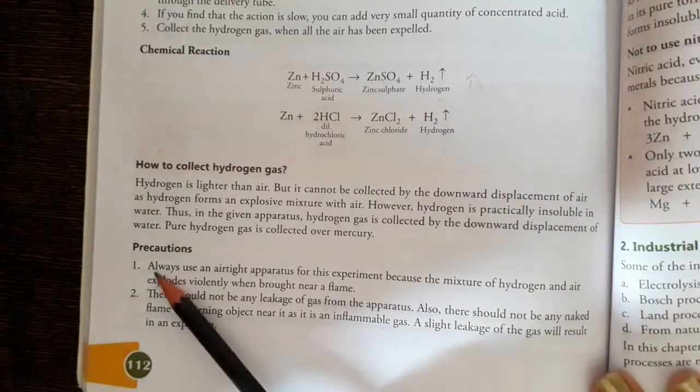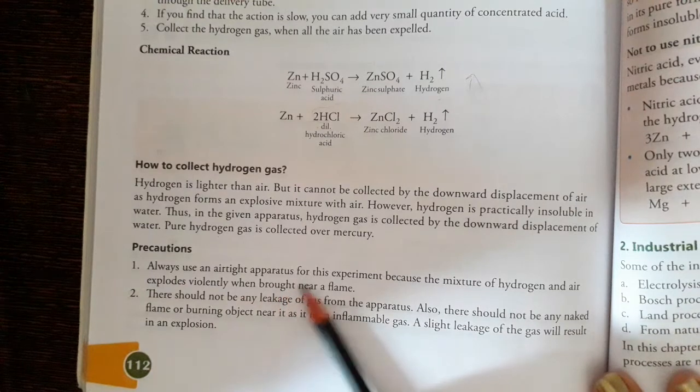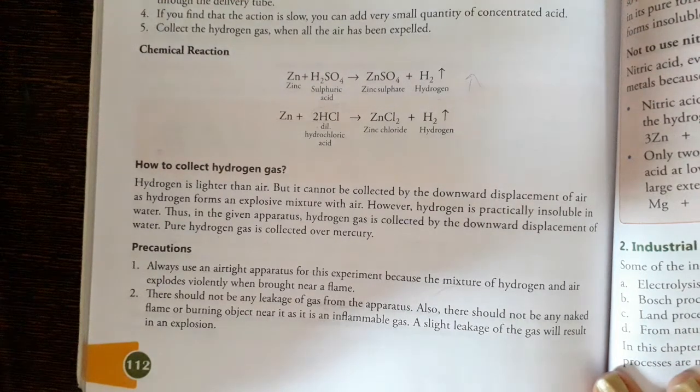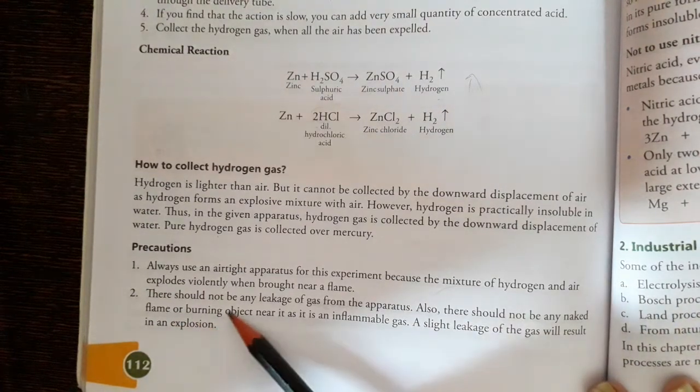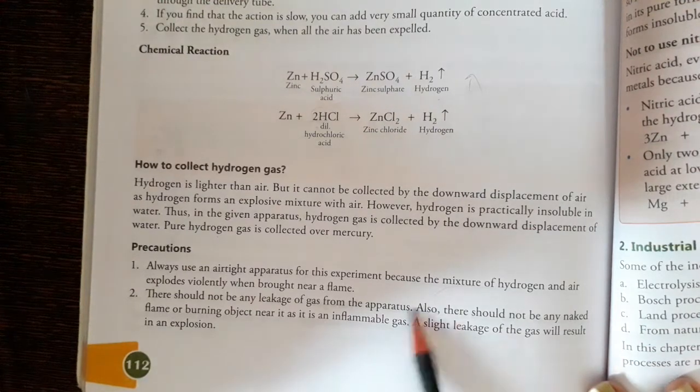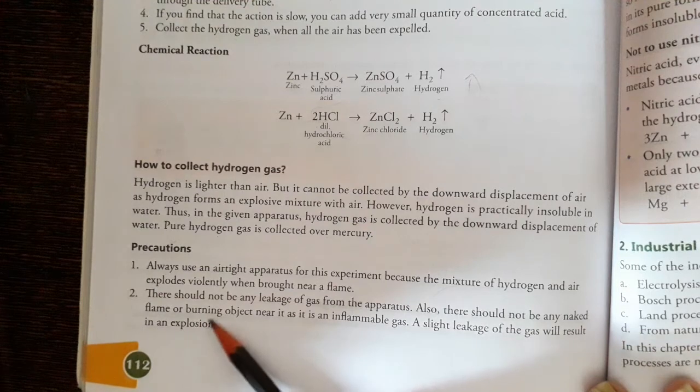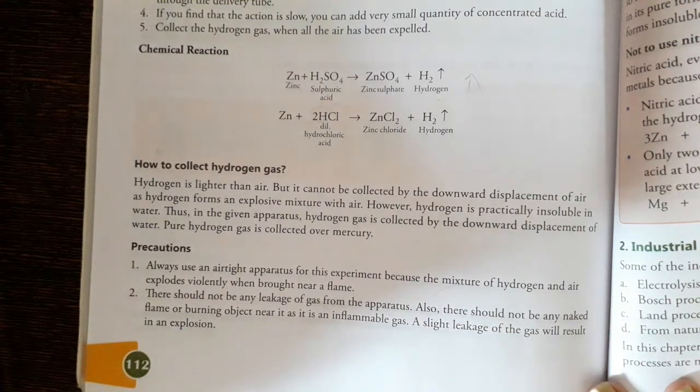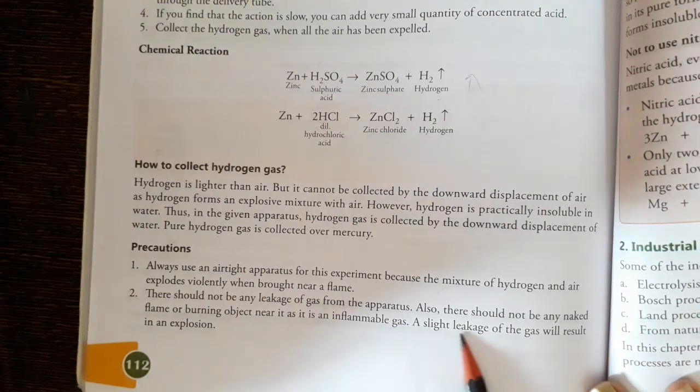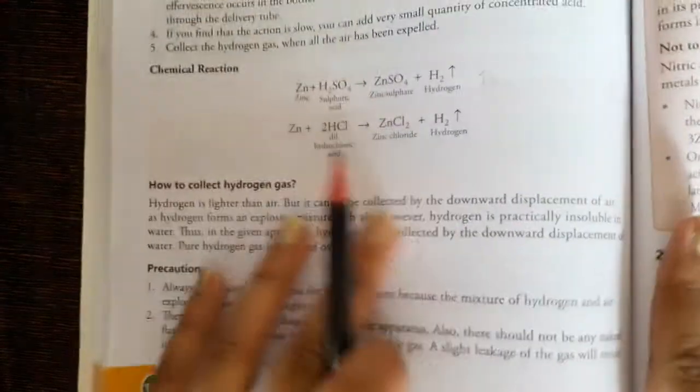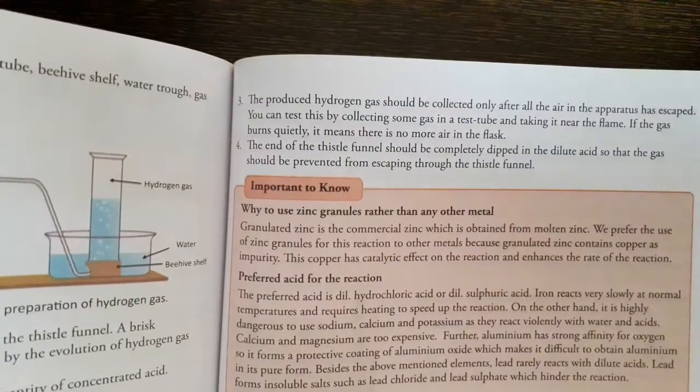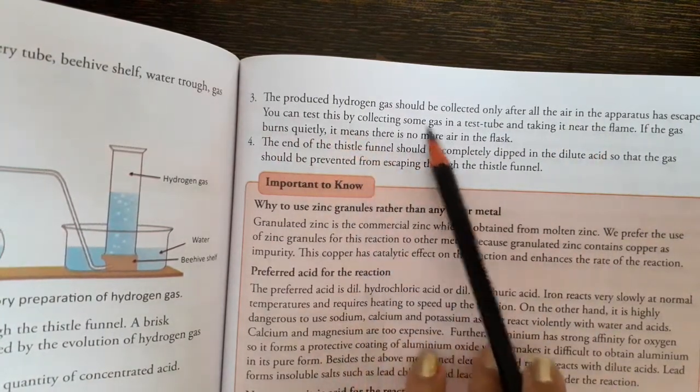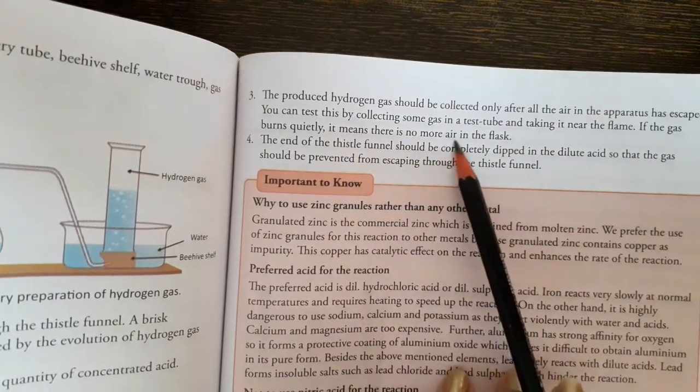Precautions: Always use an airtight apparatus because the mixture of hydrogen and air explodes violently when brought near a flame. There should not be any leakage of gas from the apparatus. Also, there should not be any naked flame and burning object near it as it is inflammable gas. A slight leakage of the gas will result in explosion.